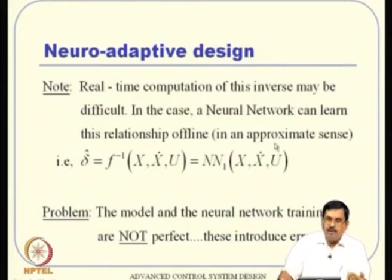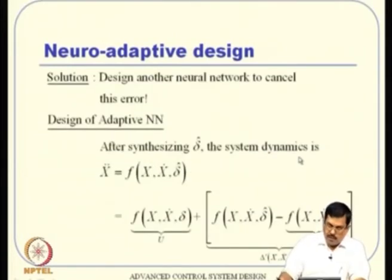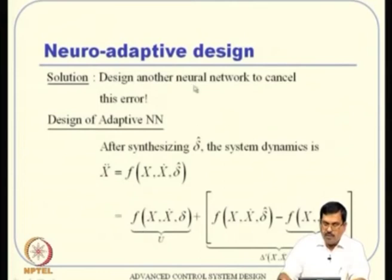Adaptively, we cannot cancel the error instantaneously, but using information sequentially we should be able to adapt so that the imperfection gets cancelled out. The idea is to design a second neural network to cancel this error. Neural network 1 provides the inverse function offline; neural network 2 is trained online adaptively to cancel the remaining error delta_prime.